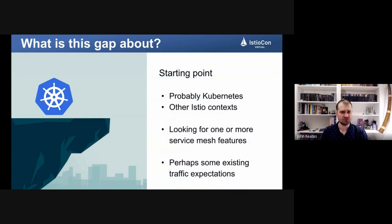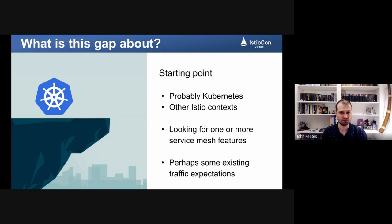Your starting point is probably Kubernetes, but it might also be something else. Istio does work with various other systems, although it might be a little bit more work to get it running — for example, virtual machines, servers, or edge devices are all supported. Looking for one or more features in the service mesh deployment is probably also a starting point requirement. And then there are the existing expectations: you probably already have some running applications, users, or plans that you need to support and adhere to.